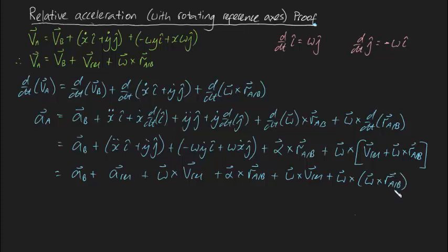It turns out we can simplify this a little bit more. It turns out we can group these two terms together. So if we do that, this turns into a_b plus a_rel plus two omega cross v_rel.